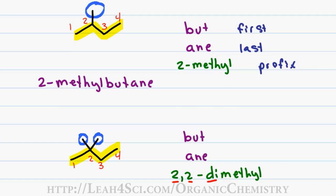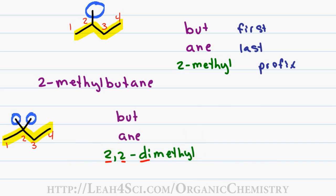Notice the way I structured the name of the substituent. You use a comma when you have a number followed by another number and a dash when you have a number and a letter or a letter and a number. In this case, I have 2 comma 2 and then the second 2 gets a dash to dimethyl.